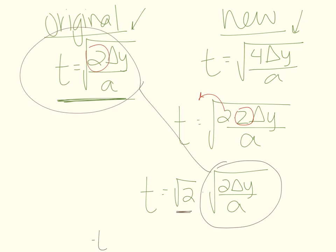So to answer the original question, time is root two times longer. The dart will be in the air root two times longer if it goes twice as high. Thank you.